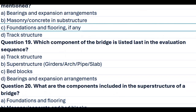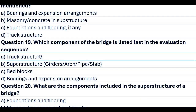Question 19. Which component of the bridge is listed last in the evaluation sequence? A. Track structure. B. Superstructure: girders, arch, pipe, slab. C. Bed blocks. D. Bearings and expansion arrangements. Answer A. Track structure.